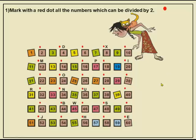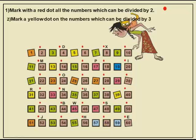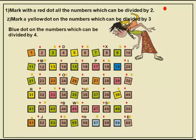If you don't know, use the division process — the remainder should be 0 for it to be exactly divisible. For example, 60 divided by 4: 4 goes into 6 once (remainder 2), bring down the 0 to get 20, and 4 fives are 20, so the remainder is 0. That means 60 is exactly divisible by 4.